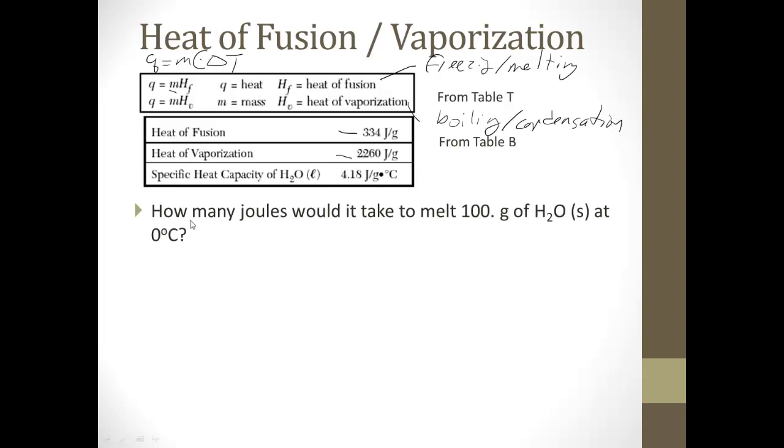All right, so let's try one of these. How many joules would it take to melt 100 grams of water at 0 degrees Celsius? Okay, so melting, so it's going to be heat of fusion formula. So, Q equals MHF. Well, Q is what we're looking for. Mass is 100 grams. And our heat of fusion is 334 joules per gram. All right, so nice and easy plug and chug. Mass is 100 grams. Heat of fusion, 334 joules per gram. Cancel, cancel. And we end up with 33400 joules.